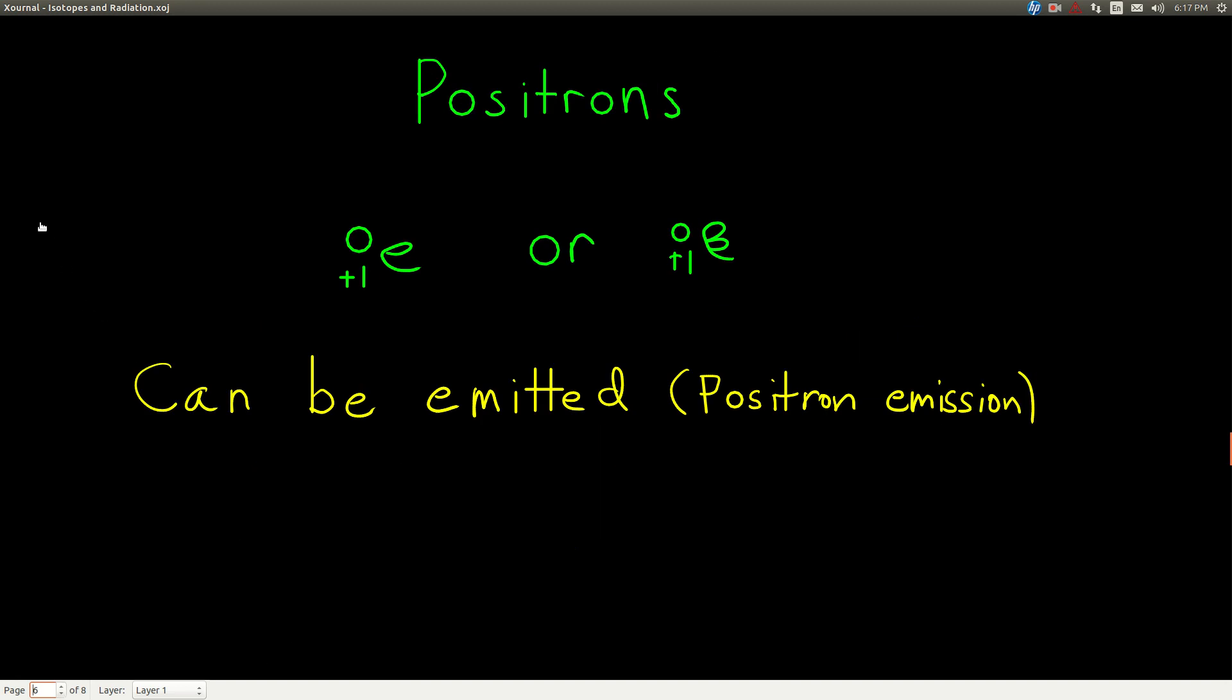Positrons are the antimatter particles of electrons. We give the symbol E with a 0 and a plus 1 instead of the negative 1 for the beta particles, or a beta with a 0 and a plus 1. The only thing we'll see positrons doing in here is being emitted - positron emission. By the way, when a positron and an electron come together, they annihilate each other and release a lot of energy in the form of gamma rays.